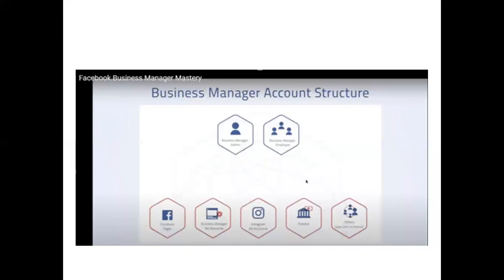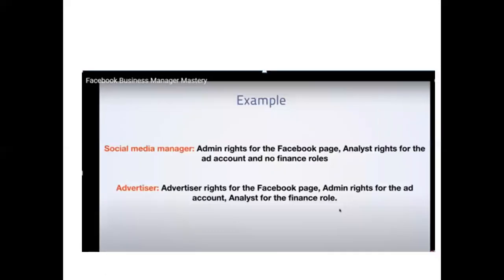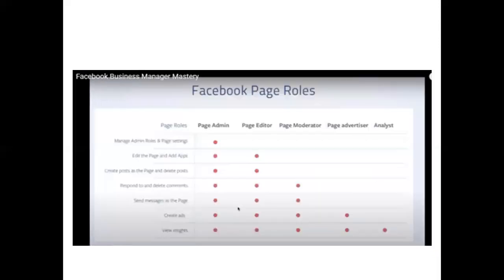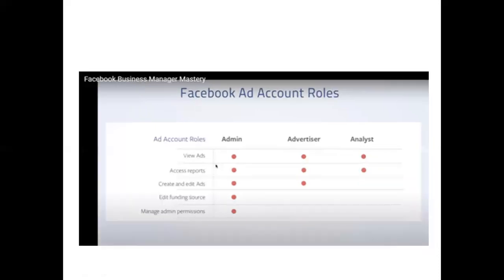This is the Business Manager structure. I'll show the difference between admins and employees — pause and watch as needed. When you assign roles there are five layers: Page Admin, Page Editor, Page Moderator, Page Advertiser, and Analytics Analyst. Page Admin has all access. Page Editor has all access except admin rights. The Analyst can only view analytics and nothing more. The same role structure applies to Facebook ad accounts and Facebook account rules.